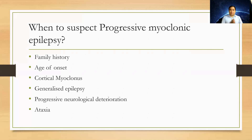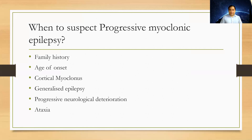When to suspect progressive myoclonic epilepsy: one important clue is family history, as in our patient, because most PME patients run as autosomal dominant or autosomal recessive patterns. If there is a family history, that is one of the strongest clues towards the diagnosis. Regarding age of onset, progressive myoclonic epilepsy is a disease of children.